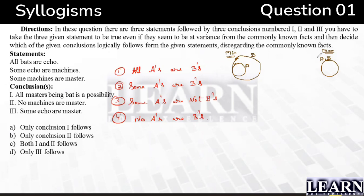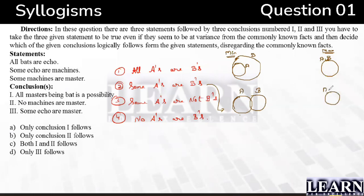For 'some A's are B's': the minimum condition is where A and B just touch each other, and the maximum condition is where the whole set of A and B are together — completely overlapping. So 'some A's are B's' also has two possibilities.